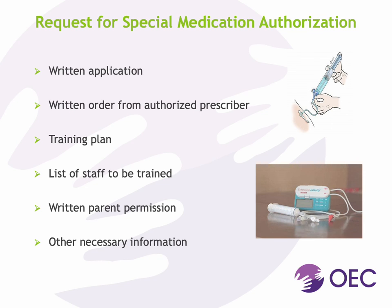A child care program may submit a written request to the Office of Early Childhood for unlicensed staff to administer medication by a method other than oral, topical, inhalant, a pre-measured commercially prepared auto-injector, injectable, or rectal. For example, a request may be submitted to administer medication via a feeding tube. The application would include a written order from an authorized prescriber, a plan that identifies how the provider and staff will be trained, a list of staff that will participate in the training, written permission from the child's parent, and any other information necessary to evaluate the request. A checklist of items required for the request for special medication authorization can be found on the Office of Early Childhood website.